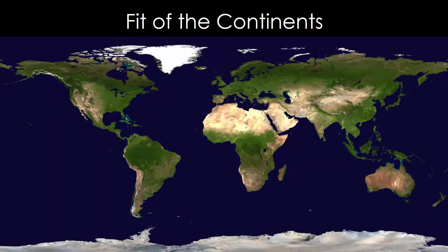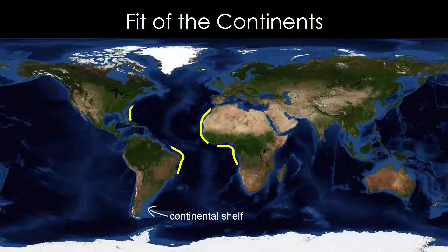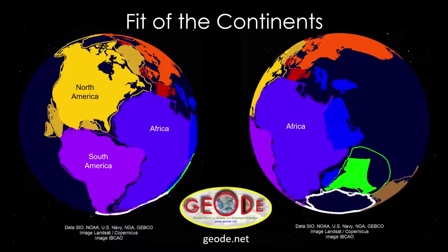Let's start with the fit of the continents. Wegener wasn't the first person to notice that the shapes of some continents seem complementary. The most obvious match is for the southwest margin of Africa and the northeast coast of South America. The fit is even better if we use the outline of the shallow continental shelf rather than the edge of the land. Now we can see that the curved northwestern edge of Africa seems to match the eastern margin of North America. Notice that India, Australia, and Antarctica are tucked together on the other side of Africa, not too far from the present-day South Pole. And Eurasia — that is, Europe and Asia — is further north than its current location.